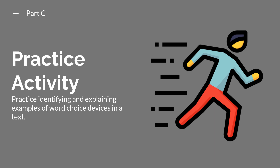Let's go ahead and pause the video one more time. This time complete Part C, where you're going to identify and explain some examples of word choice devices in the John Muir text. When you're done with the practice activity, go ahead and unpause the video to continue the lesson.